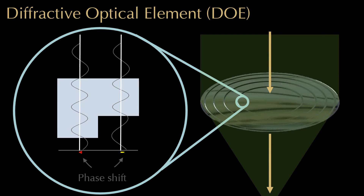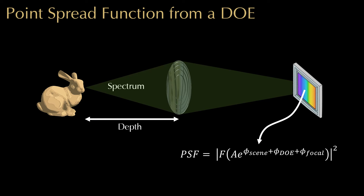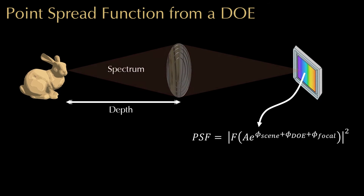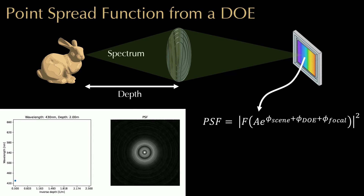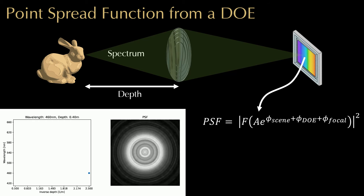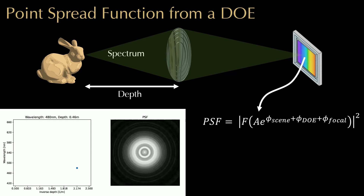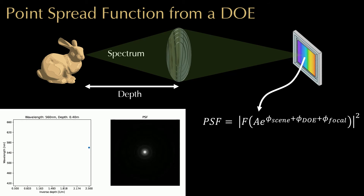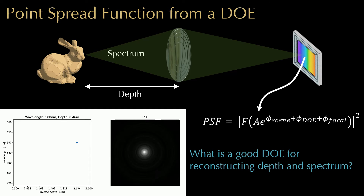Our key idea is to utilize the diffractive optical element, DOE, which spatially modulates the phase of an incident light wave. We observe that using a DOE as a lens makes the point spread function of the camera change with spectrum and scene depth. For example, a Fresnel DOE shows variation of PSF in spectrum and depth. This allows for estimating spectrum and depth from a single capture in theory by analyzing the captured PSF structure. Then, naturally, a follow-up question is: which DOE is good for reconstructing depth and spectrum?